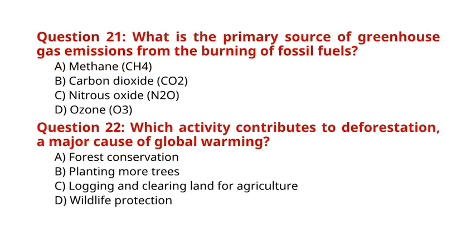Question 21: What is the primary source of greenhouse gas emissions from the burning of fossil fuels? A. Methane (CH4). B. Carbon dioxide (CO2). C. Nitrous oxide (N2O). D. Ozone (O3). The correct answer to Question 21 is option B: Carbon dioxide (CO2). Question 22: Which activity contributes to deforestation, a major cause of global warming? A. Forest conservation. B. Planting more trees. C. Logging and clearing land for agriculture. D. Wildlife protection. The correct answer to Question 22 is option C: Logging and clearing land for agriculture.